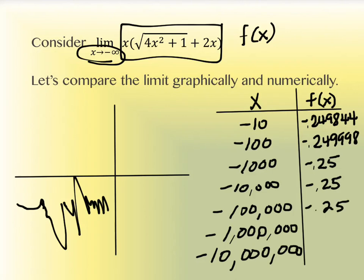So you might be led to think this has a limit of negative 0.25 — until you get to the next value and something weird happens. Because all of a sudden, when you put in negative 1,000,000, you get −0.2. And if you put in negative 10,000,000, you get zero. That sort of seems odd. If the limit is zero, why did all of those other values seem to be approaching −0.25? This is weird.